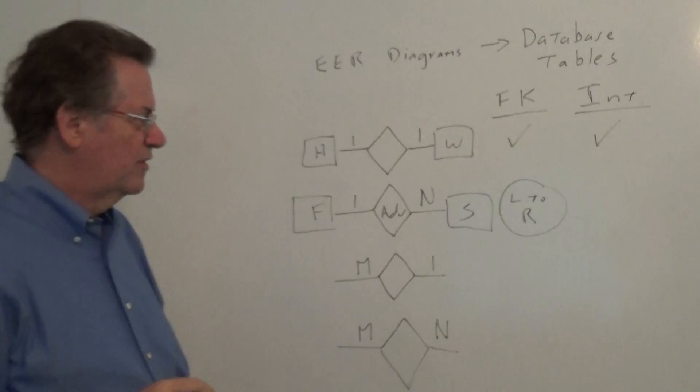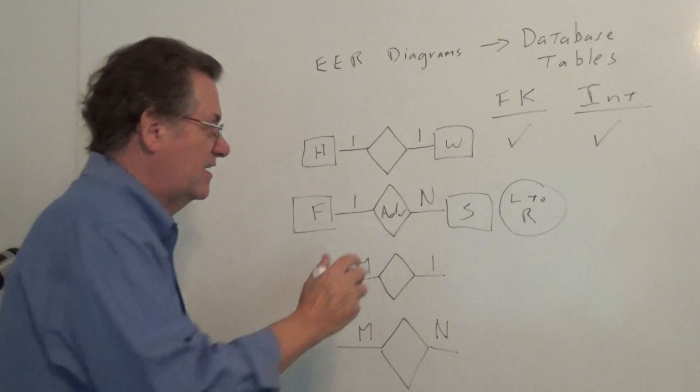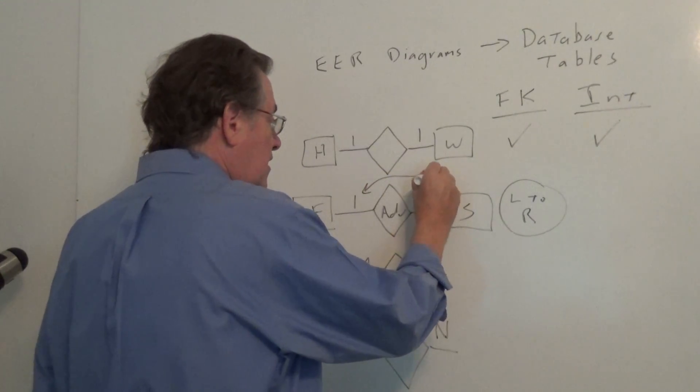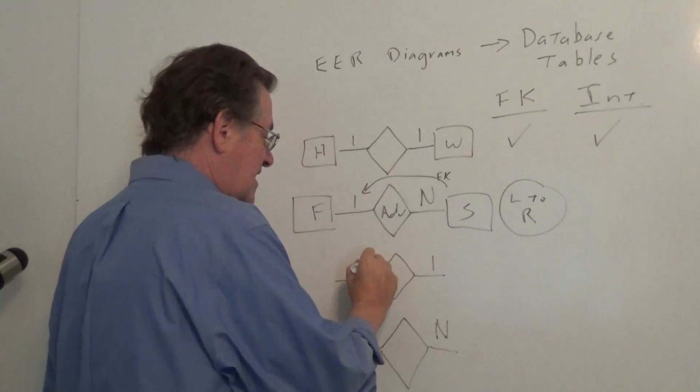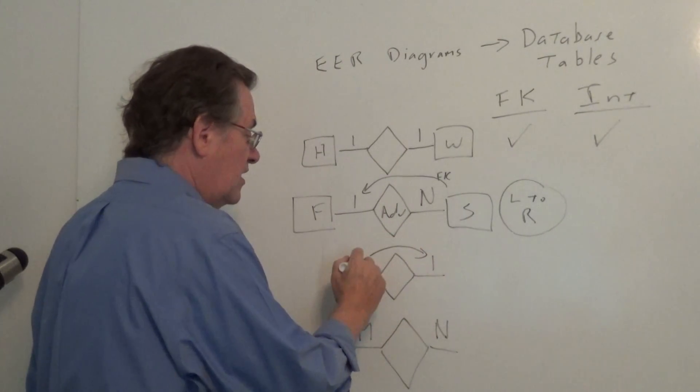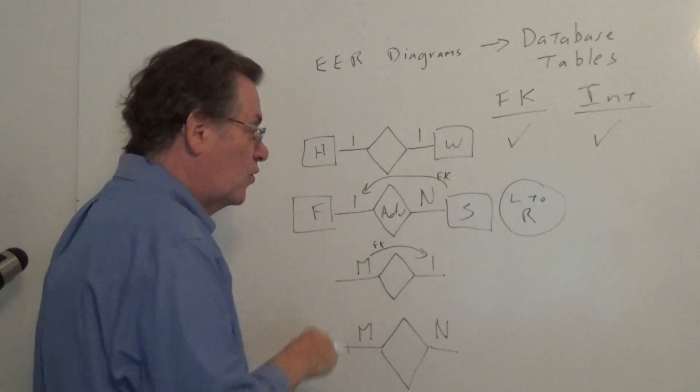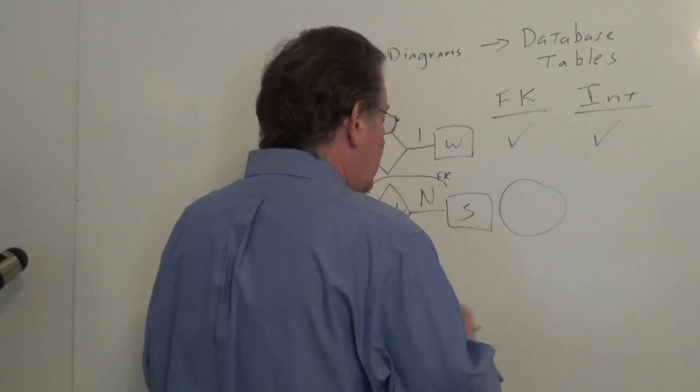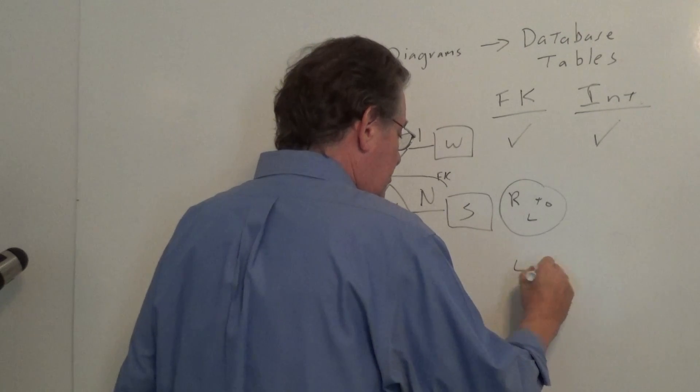And one way I remember it is, I look at where the one is. In this case, it's on the left side. So, we can have the foreign key going from right to left in this case. Likewise, in the example below, when we have many to one, we can have the foreign key going that way. It's going towards the one, and that would be, sorry, I got this backwards. This should be right to left, and this should be left to right.